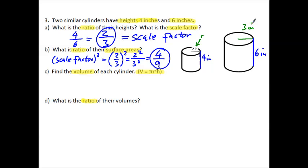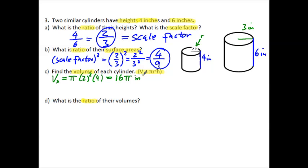Let's find the volumes. The volume of the smaller cylinder is π r squared, which is 2 squared, times the height of 4. I'm going to calculate it but keep π rather than using a decimal. 2 squared is 4, 4 times 4 is 16, so the volume is 16π cubic inches.